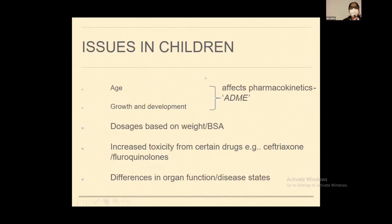What are the common issues when you prescribe an antimicrobial in a child? It depends upon age and the growth and developmental stage of the child. These are the two main factors which affect the pharmacokinetics of an antimicrobial in children — specifically the absorption, distribution, metabolism, and excretion. Dosages are frequently based on body surface area or weight, and there is increased toxicity from certain drugs in children, for example ceftriaxone and chloroquinol. There are also differences in various organ functions, primarily because of maturity of that organ system, the way the organ handles the drug, and according to various disease states.